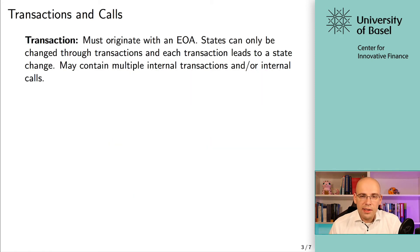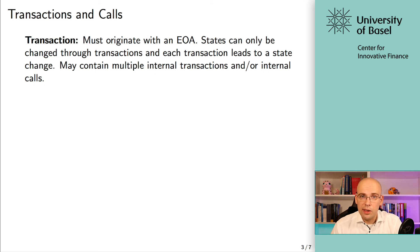Now we have various different terms. Number one: a transaction. They must originate with an EOA. States can only change through transactions, or internal transactions for that matter. Each transaction leads to a state change — the minimum change with each transaction is the iteration of the nonce. When you're issuing a transaction and it gets confirmed, the nonce of the sender address will be incremented by one. Next time the same address wants to send a transaction, they have to use a higher nonce. A transaction may also contain multiple internal transactions and/or internal calls.